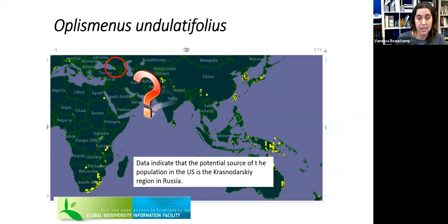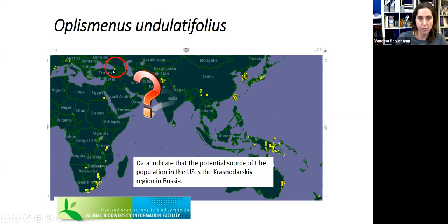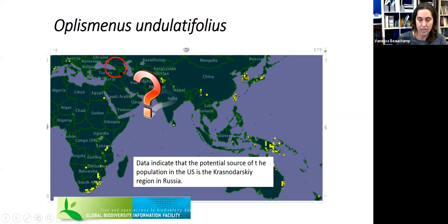So where did it come from? The APHIS crew analyzed samples in herbaria from around the country. Using the Global Biodiversity Information Facility, all the yellow points are wavy leaf presence points. What they found was the closest match to what we have was a sample taken from a region in Turkey. Our population's genetic makeup most closely matches samples collected from that area. How it got here — it probably hitchhiked on somebody, and I'll show you why in a little bit.